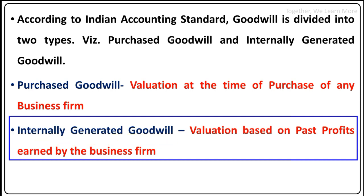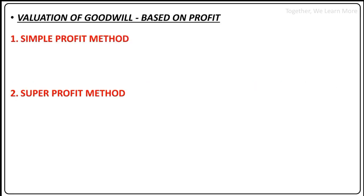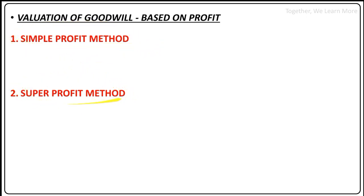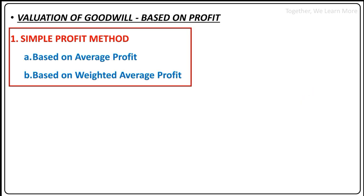Internally Generated Goodwill is something which can be calculated on the basis of past profits. Now, goodwill valuation can be done with the help of several methods. Mainly, there are two methods: one is Simple Profit Method and another one is Super Profit Method.